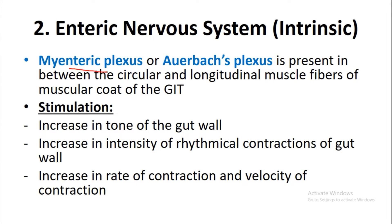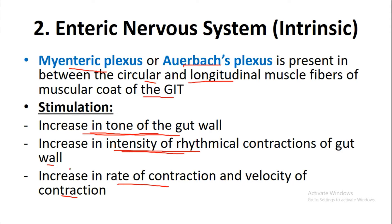The myenteric plexus, or Auerbach's plexus, is present between the circular and longitudinal muscle fibers of the muscular coat of the gastrointestinal tract. Stimulation of the myenteric plexus results in an increase in the tone of the gut wall, an increase in the intensity of rhythmical contractions, and an increase in the rate and velocity of contractions — overall increasing gut movements.